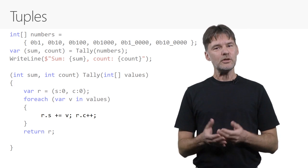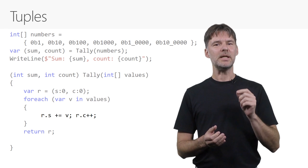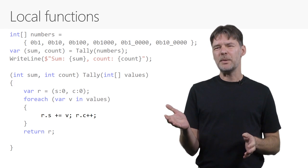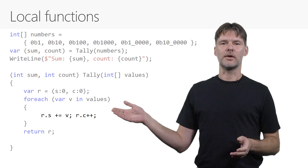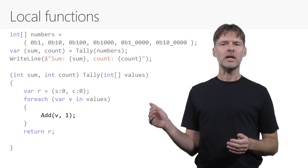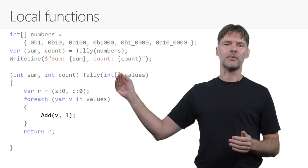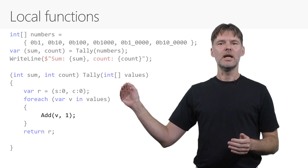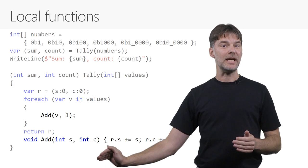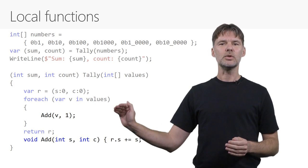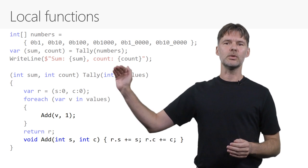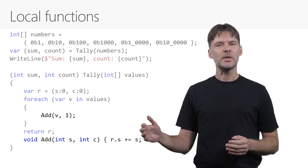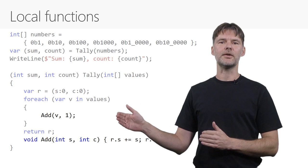So that's tuples. Now let's talk a bit about local functions. Say that I want to abstract out the way I add to r into an add method, but I want it to be able to modify r directly. I can now do that by declaring add inside of the tally method. This is called a local function. It has access to all the local variables of the enclosing scope, but can itself only be used inside the scope it is declared in.